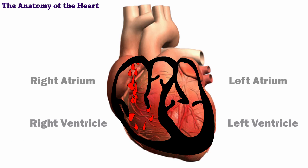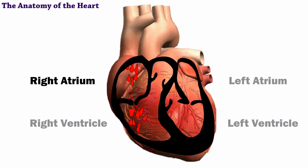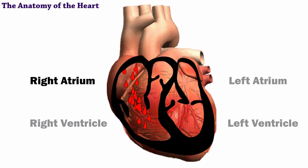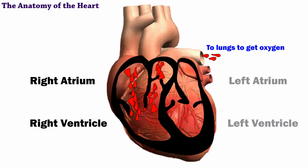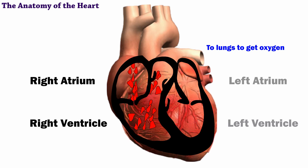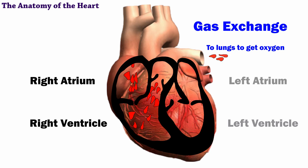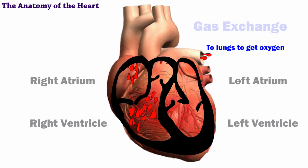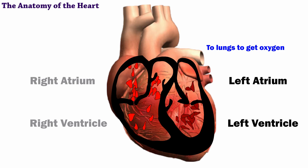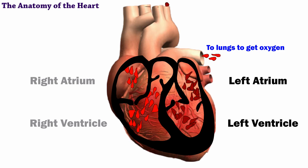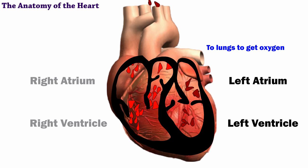Blood returning from your body's organs and tissues enters the right atrium. Because this blood has provided oxygen to your body, it's very oxygen-poor. It moves to the right ventricle and out to the lungs to pick up more oxygen in a process called gas exchange. The now oxygen-rich blood travels into the left atrium and into the left ventricle before your heart pumps it to the rest of the body.